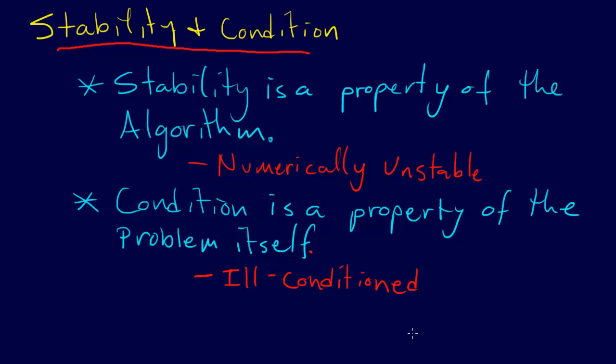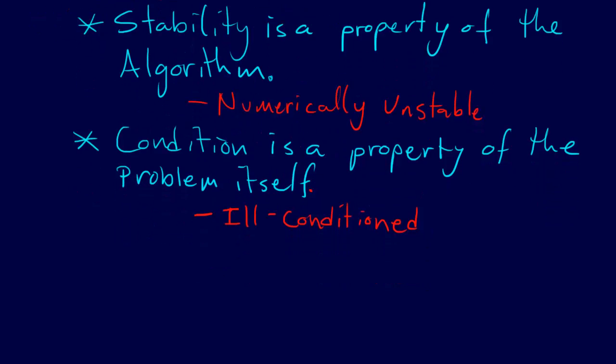And there is a way that we can define something called the condition number. And they do this in the book. Let's delve into this a little bit, but not too much. Because I want you to know how to do a little bit of analysis on this, but I don't want you to get too hung up on the condition number. And they derive this in the book.